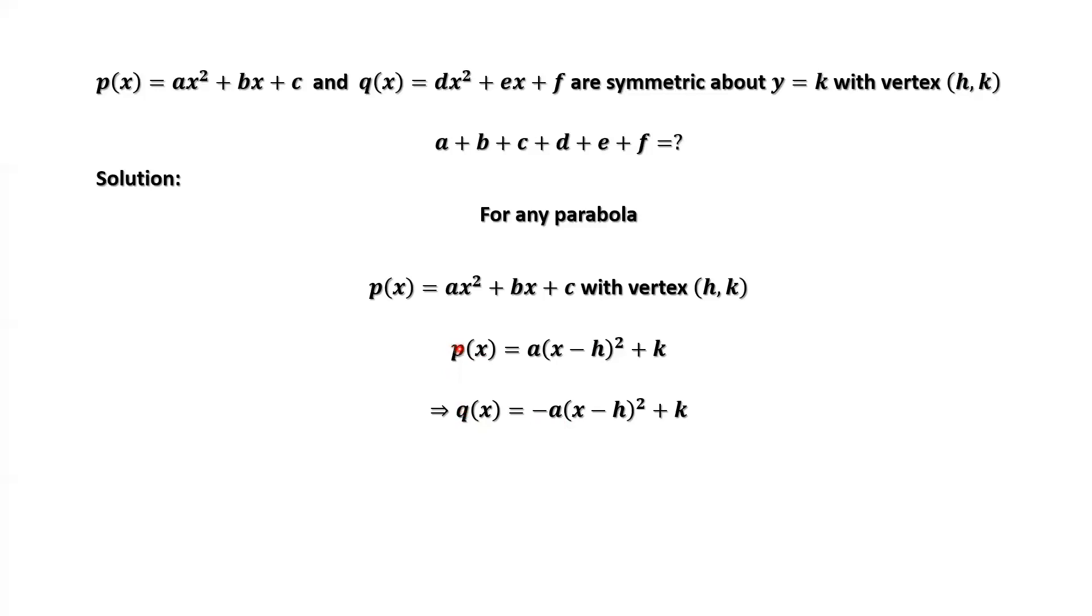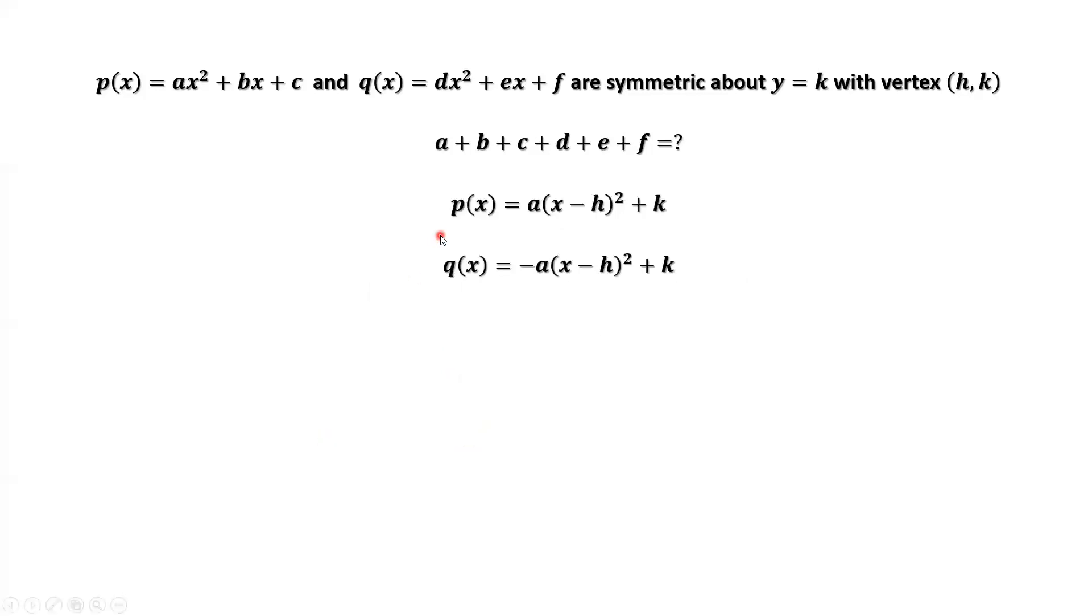From the two results, if P of x plus Q of x, we have the following result. This is P of x, this is Q of x. Here is positive, here is negative. They all cancel each other. The final answer is 2 times k.